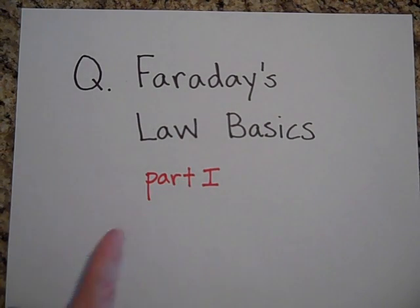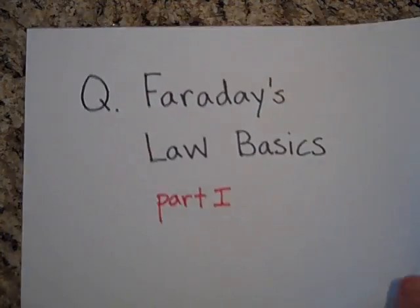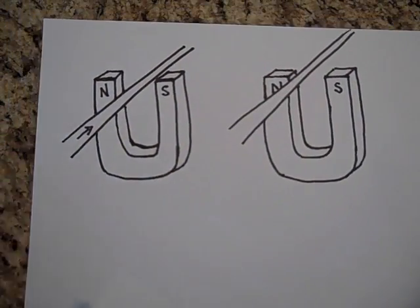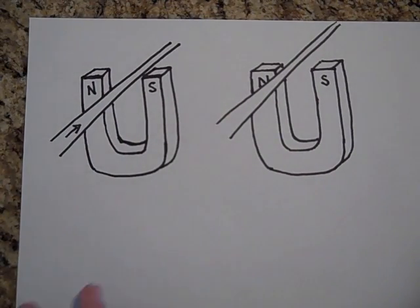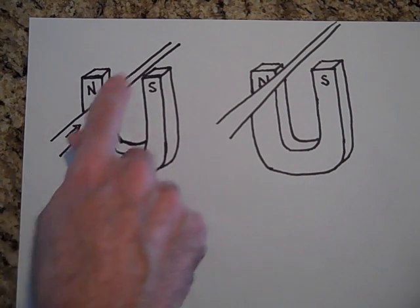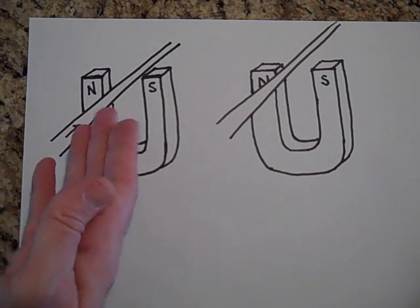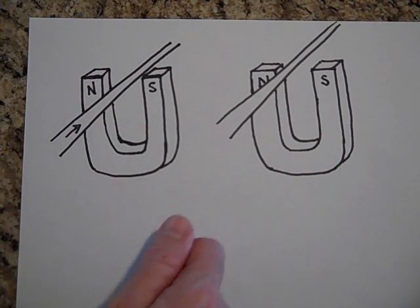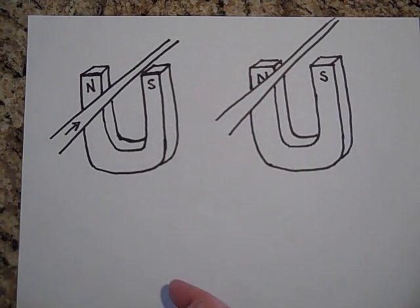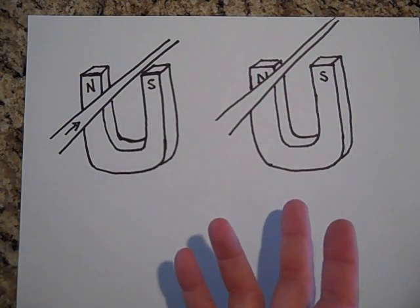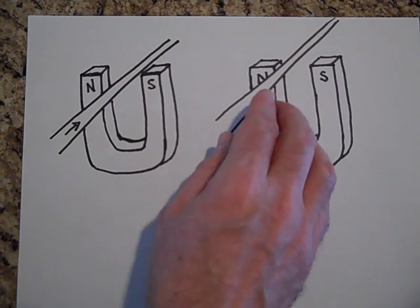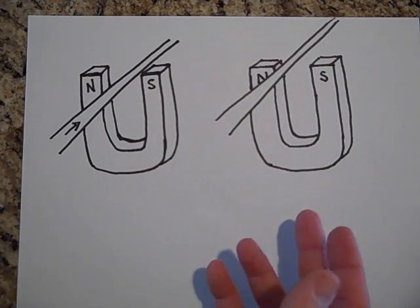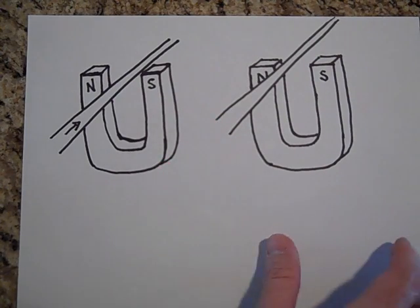I'd like to tell you about Faraday's law — the basics. This will be part one. Before I get into Faraday's law, I want to show you that with electricity and magnetism you can cause a current in a wire to move up or down — that's called the motor effect. Or you can move the wire and get a current. That's what Faraday's law is about: by moving the magnetic field relative to the wire, you can get a current in the wire.